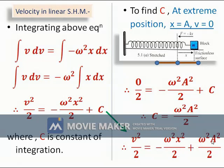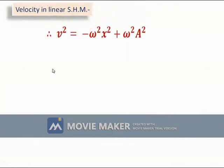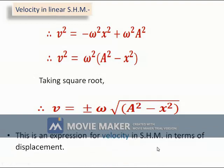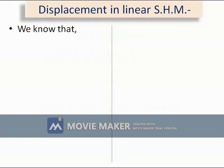Substituting the value of C back, we get: v²/2 = −ω²x²/2 + ω²a²/2, which simplifies to v² = ω²(a² − x²), and therefore v = ±ω√(a² − x²). This is the expression for the velocity of a particle performing simple harmonic motion in terms of displacement.